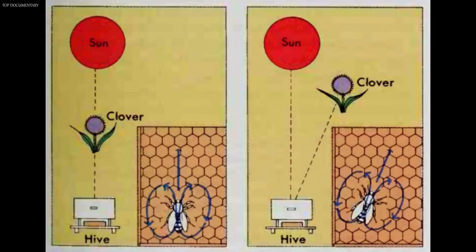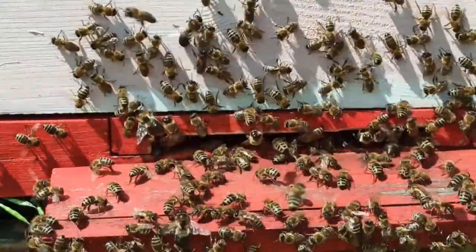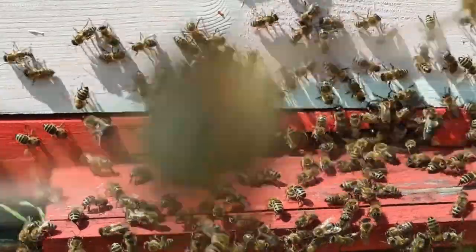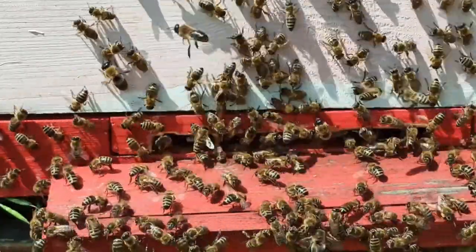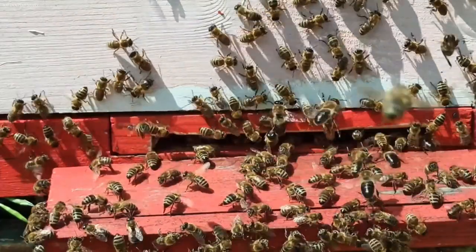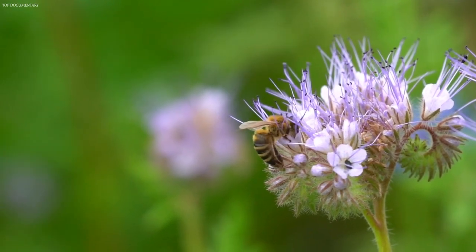A worker bee called a scout dances a figure-eight pattern up the honeycomb to show the location of distant nectar. The more rapidly the bee dances, the nearer the food is located. The imaginary line between the loops of the eight indicates the position of the nectar in relation to the sun. Then the worker begins to produce wax and to build honeycomb cells. After building the honeycombs, the worker stands guard at the hive entrance and receives nectar collected by other bees. Finally, when a worker is about three weeks old, it begins to hunt for food and continues this job for the rest of its life. During the busy summer months, a worker may live for only about six weeks. During the less active months of fall and winter, a worker may live up to several months.